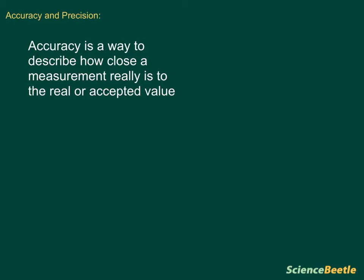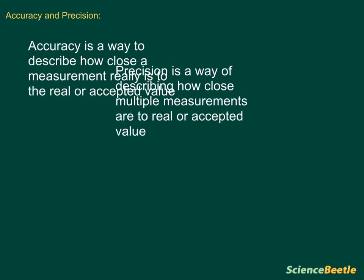And I'll show you what this really means in a couple of examples in a second. But first, I want to give you the definition for what we call precision. Precision is going to be slightly different than accuracy, but they're very similar to one another. There is a subtle difference, and let's see if you can figure this out. So precision is the following. Precision is a way of describing how close multiple measurements are to the real or accepted value.